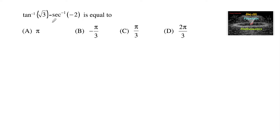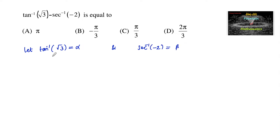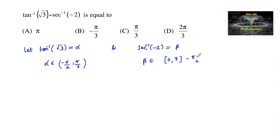Let us evaluate tan inverse of root 3 minus secant inverse of minus 2. Let tan inverse of root 3 equal alpha and secant inverse of minus 2 equal beta. As per the principal range, alpha belongs to minus pi by 2 to plus pi by 2, and beta belongs to 0 to pi, where beta should not be equal to pi by 2.